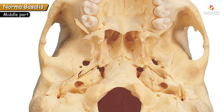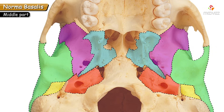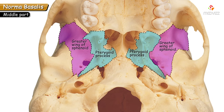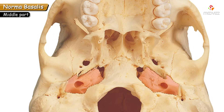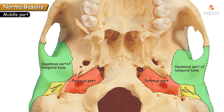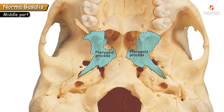The lateral areas on each side are formed by two parts of the sphenoid and three parts of the temporal bone. The two parts of the sphenoid are the pterygoid process and the greater wing of the sphenoid. The three parts of the temporal bone are the petrous part, the tympanic part, and the squamous part.